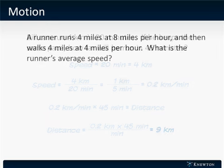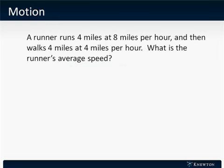Let's look at another example. A runner runs 4 miles at 8 miles per hour, and then walks 4 miles at 4 miles per hour. What is the runner's average speed?